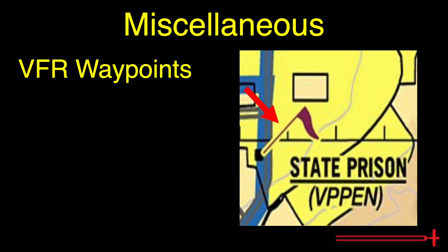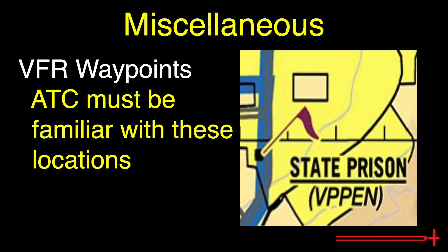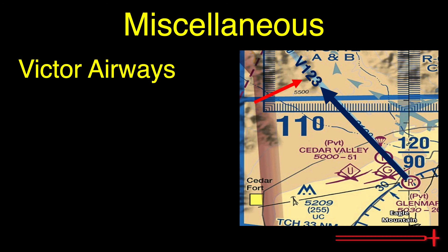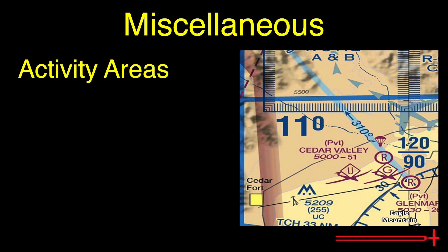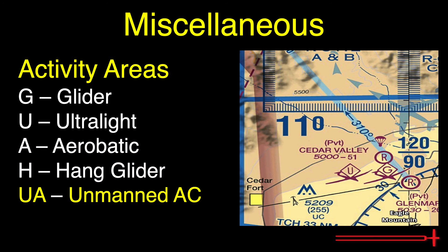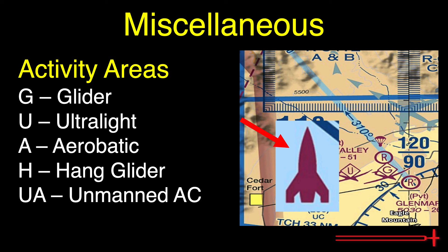Under miscellaneous items: significant VFR waypoints are depicted by flags with an underlined name, often with a five-digit code usable for flight planning — ATC must be familiar with these locations. Victor Airways are charted as long blue strips along the charts, with the VOR radial depicted and a two or three-digit numerical code preceded by a V. Miscellaneous activity areas include: G for glider, U for ultralight, A for aerobatic, H for hang glider, and UA for unmanned aircraft. A parachute symbol depicts areas of heavy parachuting activity, and a space shuttle symbol depicts a space launch area.